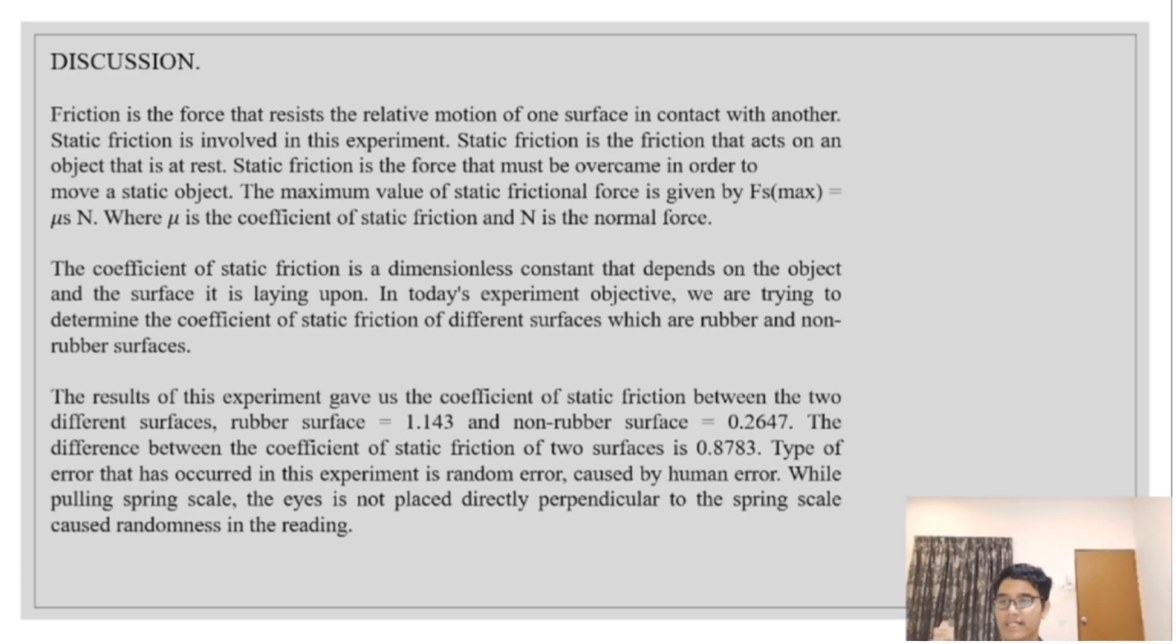Discussion. Friction is the force that resists the relative motion of one surface in contact with another. Static friction is involved in the experiment. Static friction is the friction that acts on an object that is at rest. Static friction is the force that must be overcome in order to move a static object. The maximum value of static friction force is given by Fs max equal to μs N, where μs is the coefficient of static friction and N is the normal force. The coefficient of static friction is a dimensionless constant that depends on the object and the surface it is laying upon.